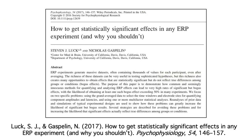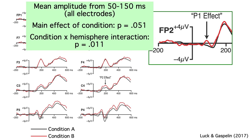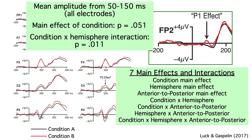I wrote a paper about this issue with Nick Gaspelin, who was a postdoc in my lab. You can find more information there about how researchers should choose their time windows and electrode sites. The paper also makes another point related to the significant condition-by-hemisphere interaction for the P1 wave. In a three-way ANOVA with factors of condition, electrode hemisphere, and anterior-to-posterior electrode position, you get three main effects, three two-way interactions, and one three-way interaction — seven p-values from one analysis. This means you have seven opportunities for noise to create a bogus but significant effect.